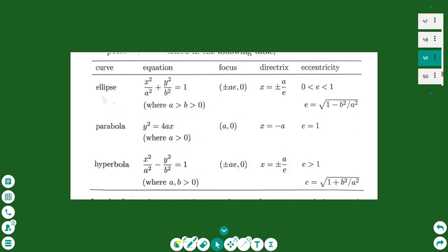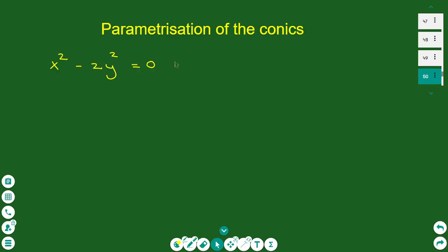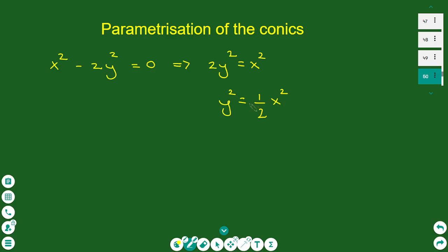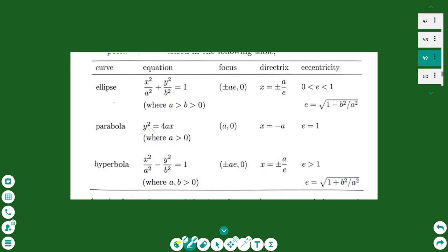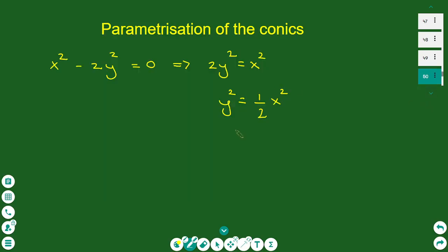I have some examples on screen to find the parametric equations from the equation. First it is necessary to write the conic in standard position. I rearrange the equation to make y² the subject and then divide by 2, giving (1/2)x², which is obviously a parabola of the form y² = 4ax. I factorize the right-hand side as 4 · (1/8) · x², so in this case a = 1/8.